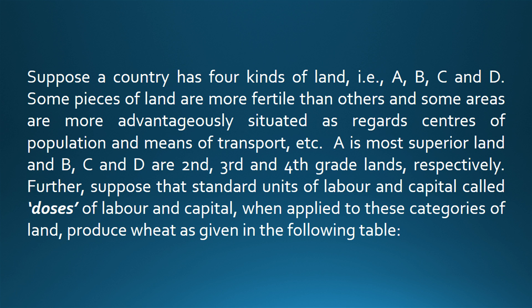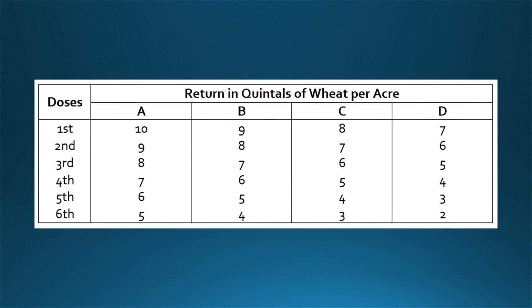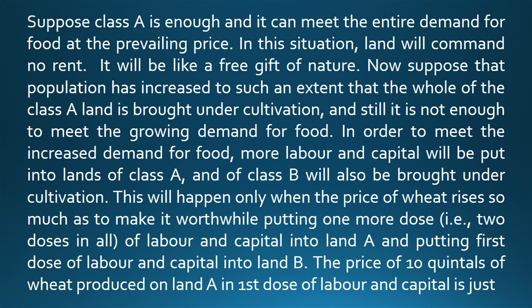A is most superior land and B, C and D are second, third and fourth grade lands, respectively. Further, suppose that standard units of labour and capital, called doses of labour and capital, when applied to these categories of land, produce wheat as given in the following table. Suppose class A is enough and it can meet the entire demand for food at the prevailing price. In this situation, land will command no rent. It will be like a free gift of nature.